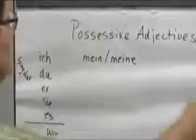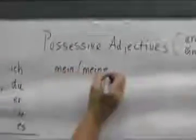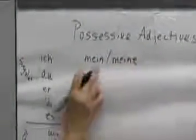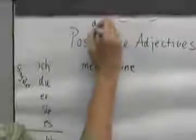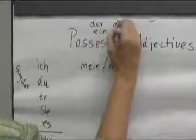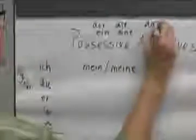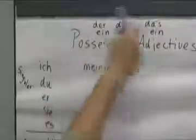And I wrote up here that possessive adjectives are ein words. So that's why mein and meine have two different endings. Mein has no ending, meine has an e ending. Remember, the der word became ein, the die word became eine, and the das word became ein when we used ein words. And the possessive adjectives follow the same rules.